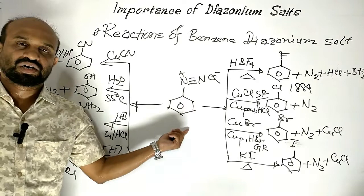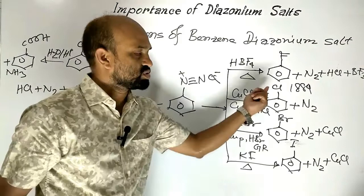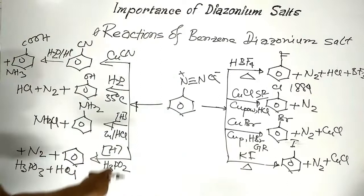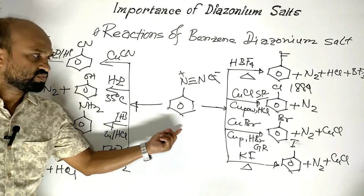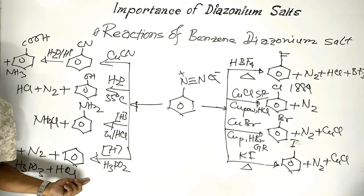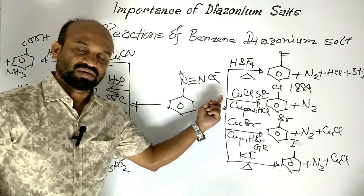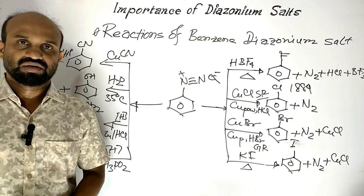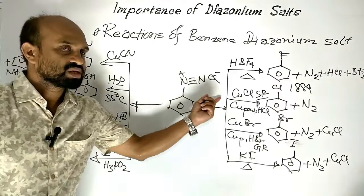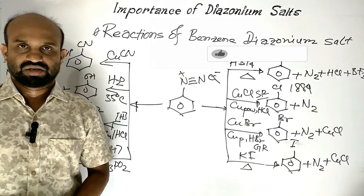So these are the reactions of benzene diazonium salt. From benzene diazonium salt we can produce fluorobenzene, chlorobenzene, bromobenzene, iodobenzene, and cyanobenzene — which converts to benzoic acid on acidic hydrolysis. We can also prepare phenol, aniline, and benzene. The chlorination, bromination, and cyanation reactions are called Sandmeyer reactions. When Sandmeyer reactions are modified using copper powder and hydrochloric acid in place of cuprous halide, the reaction is called the Gattermann reaction. This is all about the importance of benzene diazonium salts. Thank you very much.